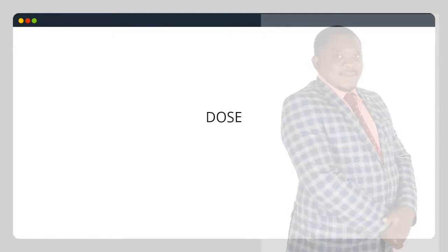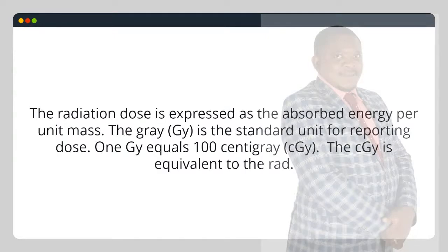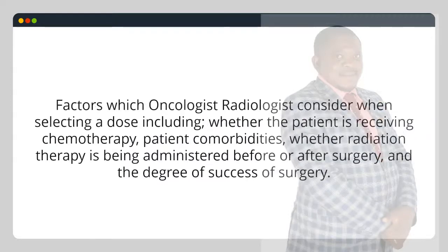Dose. The radiation dose is expressed as the absorbed energy per unit mass. The gray (Gy) is the standard unit for reporting dose; 1 Gy equals 100 cGy (centigray). The cGy is equivalent to the rad. Factors which oncologist radiologists consider when selecting a dose include whether the patient is receiving chemotherapy, patient comorbidities, whether radiation therapy is being administered before or after surgery, and the degree of success of surgery.